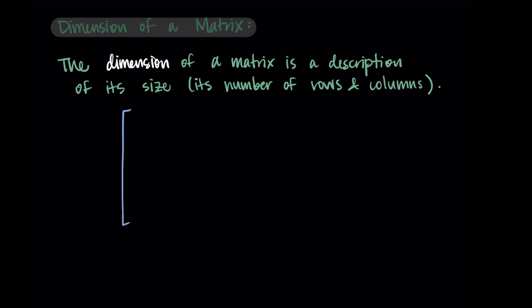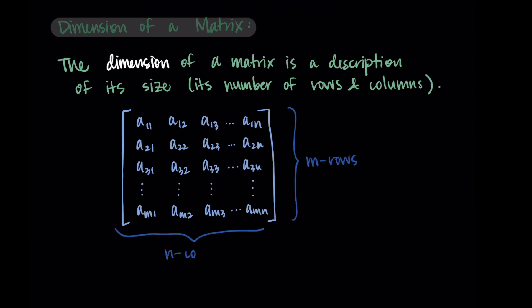So if we have a matrix here and we give all of the elements an index, just to keep track of which one is which, we can see that we have n columns here and m rows.